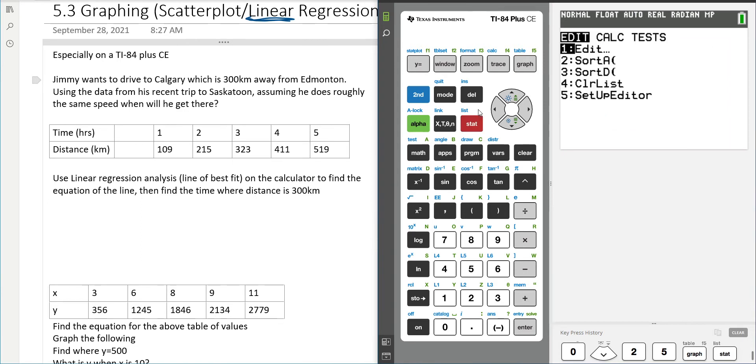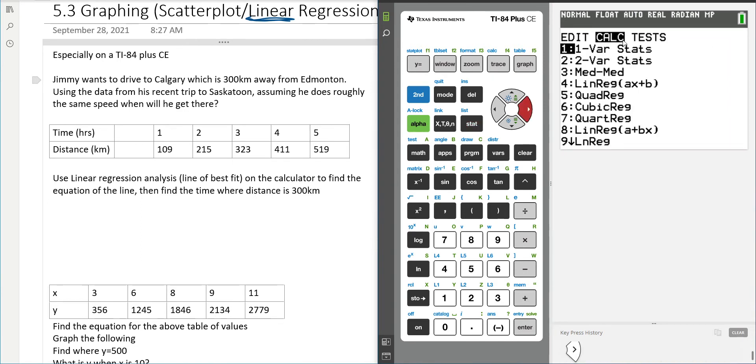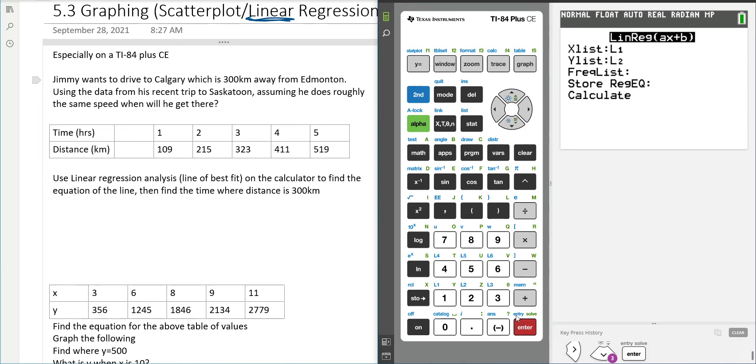So what we do is we press stat, we go over to calc on the top, we go down to linear regression that's number 4. We press enter or we can press number 4. Then we go down to where it says store and we're going to click vars which is variables. We're going to go to y vars which is y variables, function, and we're going to put the first function. So it's going to store what it gets now in for our first function. We're going to press calculate.